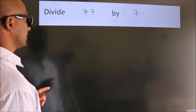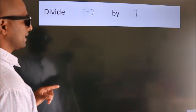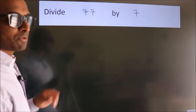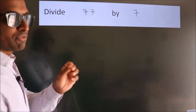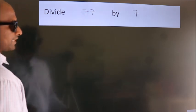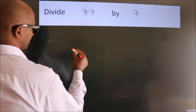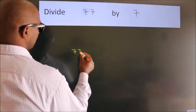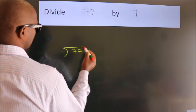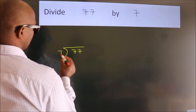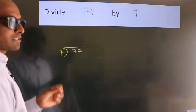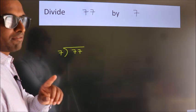Divide 77 by 7. To do this division, we should frame it in this way: 77 here, 7 here. This is your step 1.